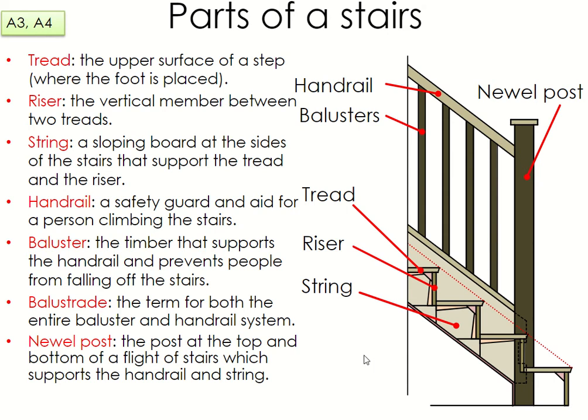If you're following the book, on the top of page 114 you have to label the parts of the stairs: one is the handrail, two is the baluster, three is the tread, four is the riser, five is the string, and six is the newel post. You need to label all six parts.